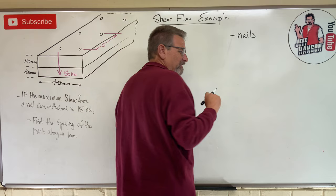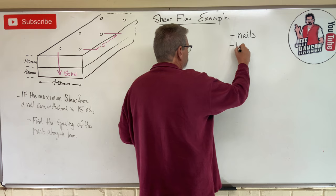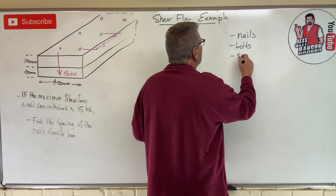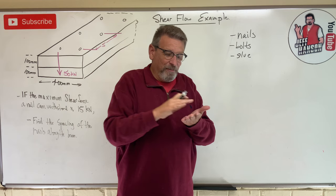I could use nails. This project here, this particular example is going to use nails. We could use bolts, or we could test the strength of glue. How much glue do I need that will keep that joint from shearing?